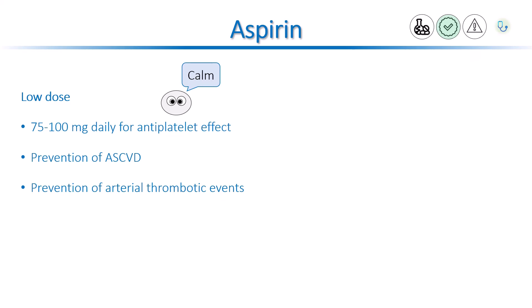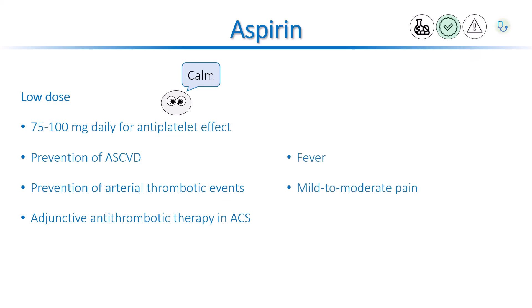Another important indication is acute coronary syndrome. Aspirin is used for its adjunctive antithrombotic effects in acute coronary syndrome. Aspirin is also used to reduce fever and relieve mild to moderate pain from conditions such as muscle aches, toothaches, common cold, and headaches. 325–650 mg of aspirin is needed to produce an anti-inflammatory effect. The use of NSAIDs has largely replaced the use of aspirin as a pain medication.